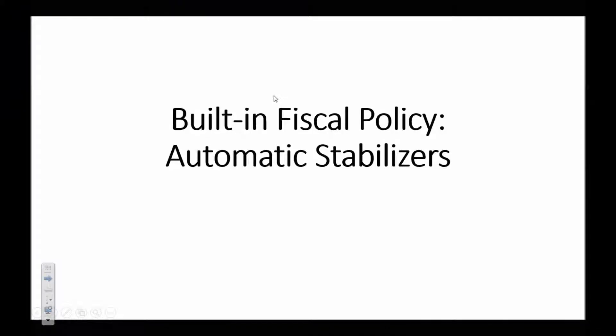This tutorial is going to explain how in our system of government and our economic system, where the government and the economy are together, we have what's called built-in fiscal policy. These are referred to as automatic stabilizers. In times of recession, there are automatic things that kick in where government spending goes up and taxes go down to create an expansionary policy all by itself. And the same thing will occur with contractionary policy during inflation — some things automatically happen.